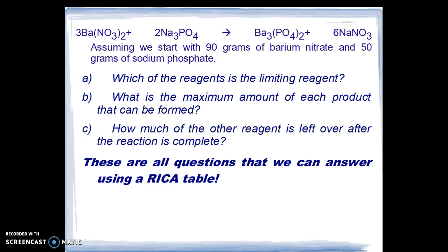We're going to assume we start with 90 grams of barium nitrate and 50 grams of sodium phosphate reactant, and we can answer three questions: Which of the reagents is the limiting reagent? What is the maximum amount of each product that can be formed? And finally, how much of the other reactant is left over after the reaction is complete? We can answer all these questions using a RICA table.